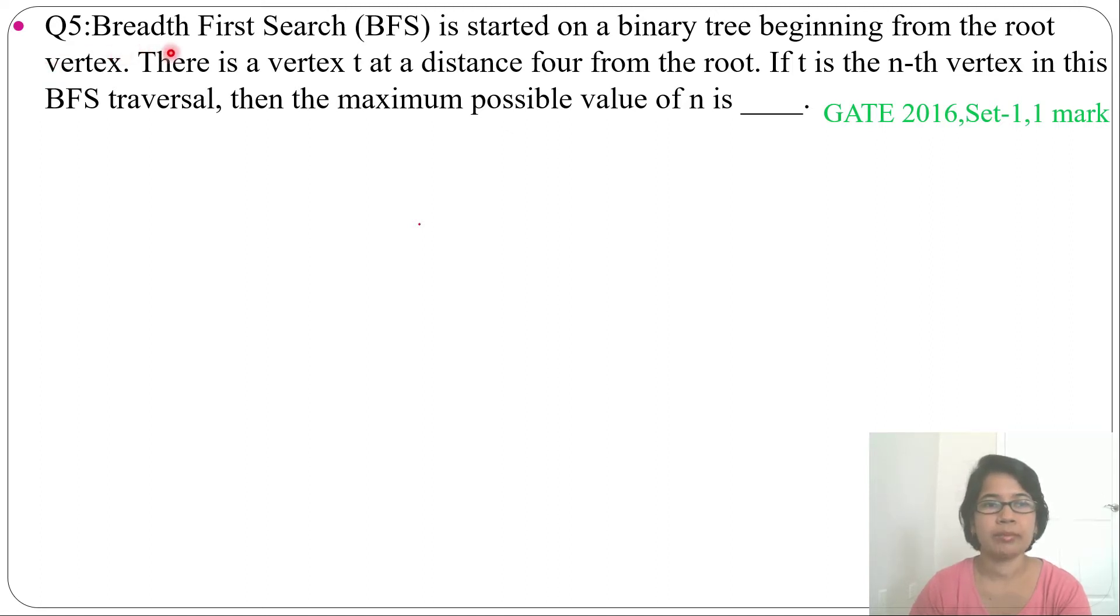Let's read the question: Breadth First Search (BFS) is started on a binary tree beginning from the root vertex. There is a vertex t at a distance 4 from the root. If t is the nth vertex in this BFS traversal, then the maximum possible value of n is blank.